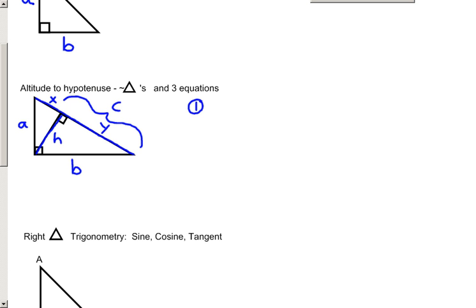The first is a relationship of the leg width compared to the hypotenuse. The relationship is that the leg squared, or A squared in this diagram, equals the entire hypotenuse times the adjacent piece of the hypotenuse from the altitude. So again, that would be A squared equals C times X.